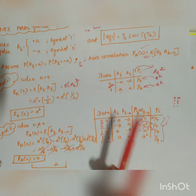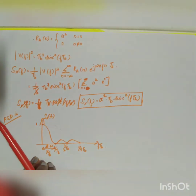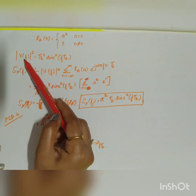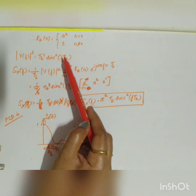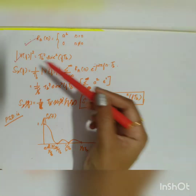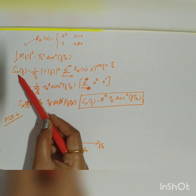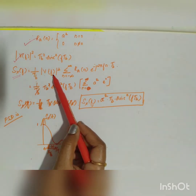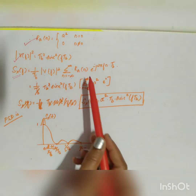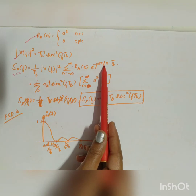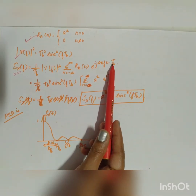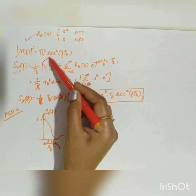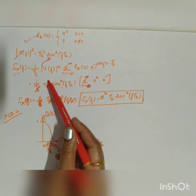Combining both cases: R_a(n) = a² for n=0 and R_a(n) = 0 for n ≠ 0. Also, |V(f)|² = T_b² × sinc²(f × T_b). Substituting into the main power spectral density equation, S_x(f) = (1/T_b) × |V(f)|² × Σ R_a(n) × e^{-j2πfnT_b}, the T_b factors cancel to leave one T_b.